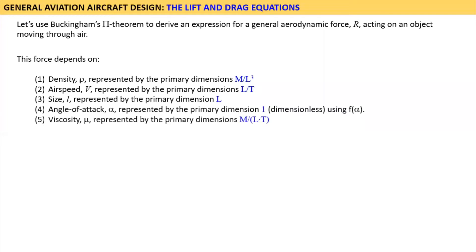We also know that viscosity mu, represented by the primary dimensions M divided by the product L times T, contributes to the force. The more viscous a fluid, the larger the force. A basic representation of these contributions is shown where R is a function of rho, V, L, alpha, and mu. Additionally, R is the dependent variable because its magnitude depends on the independent variables rho, V, L, alpha, and mu.